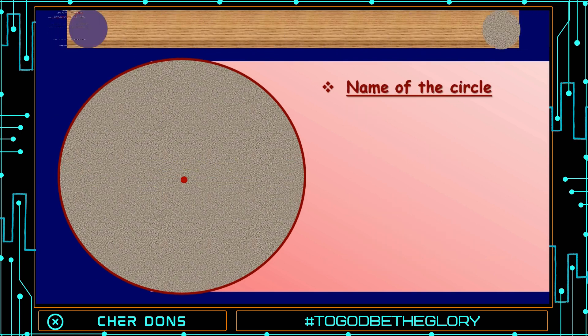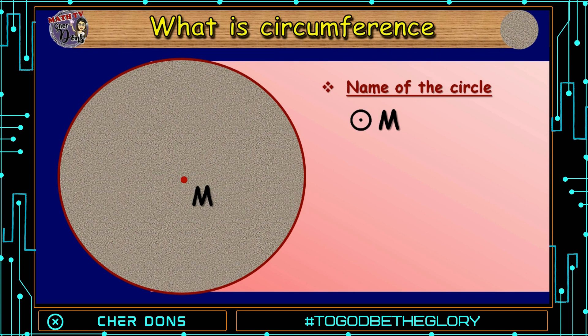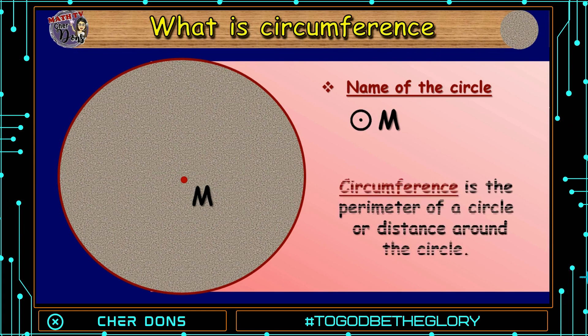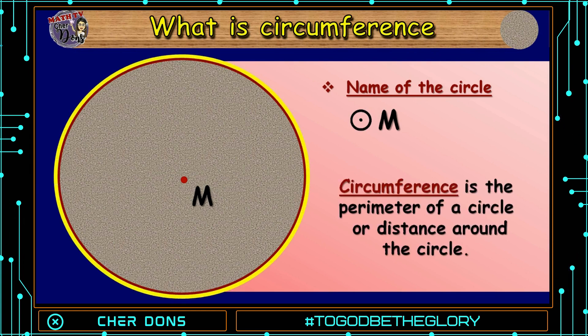Let us name the circle — it's circle M. What is circumference? Circumference is the perimeter of a circle, or the distance around the circle.